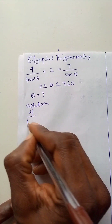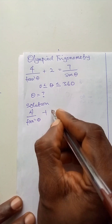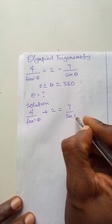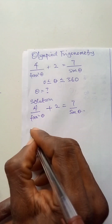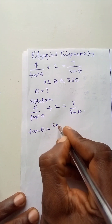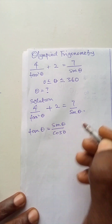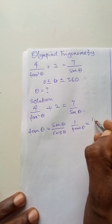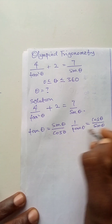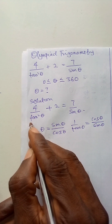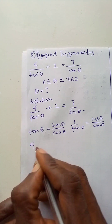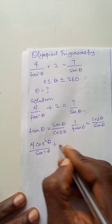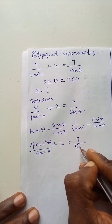We have 4 over tan squared theta plus 2 is equal to 7 over sine theta. Let us remember that in trigonometry, tan theta is sine theta over cos theta, or 1 over tan theta is cos theta over sine theta. I will apply this here because I have 4 over tan squared theta, so it becomes 4 cos squared theta over sine squared theta plus 2 is equal to 7 over sine theta.